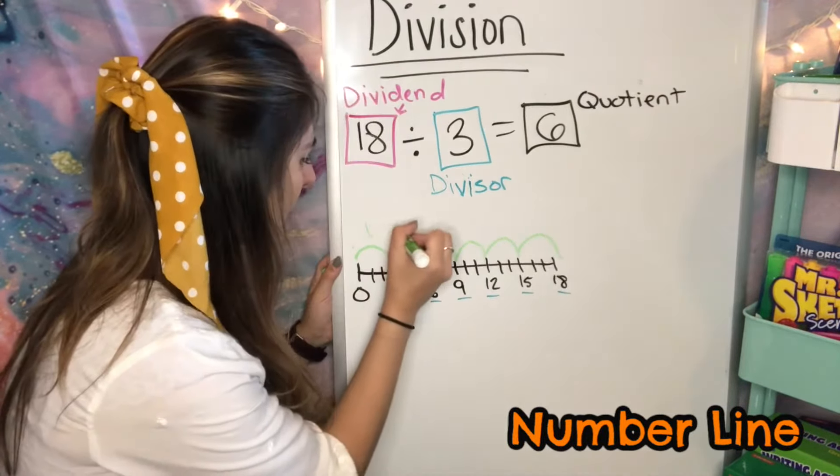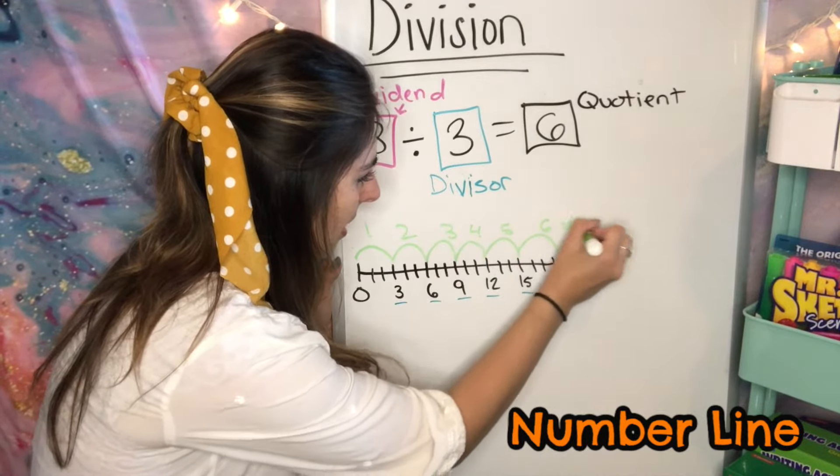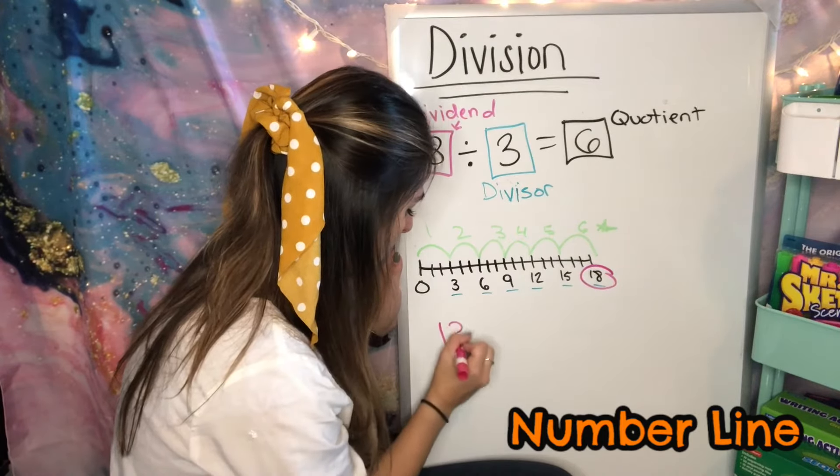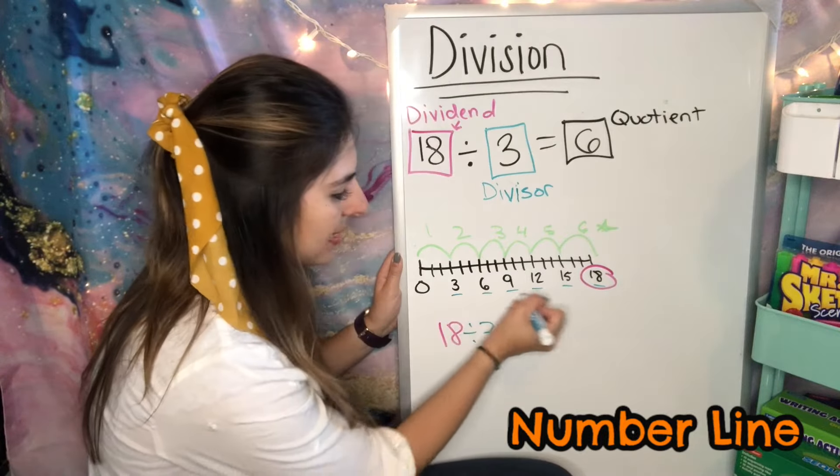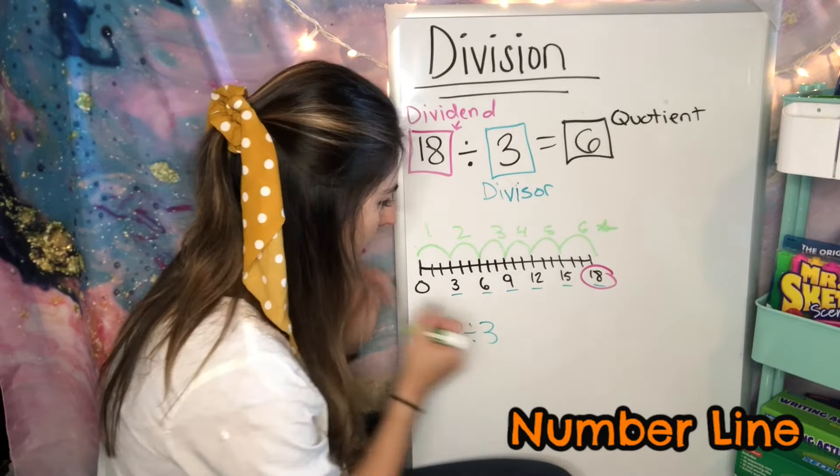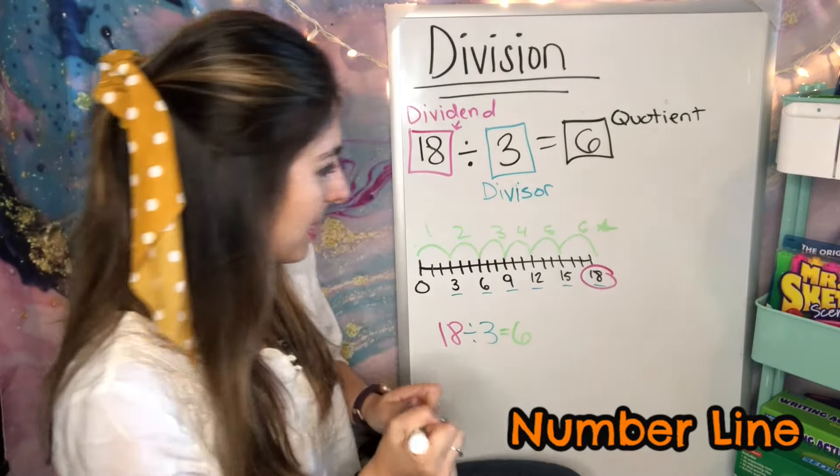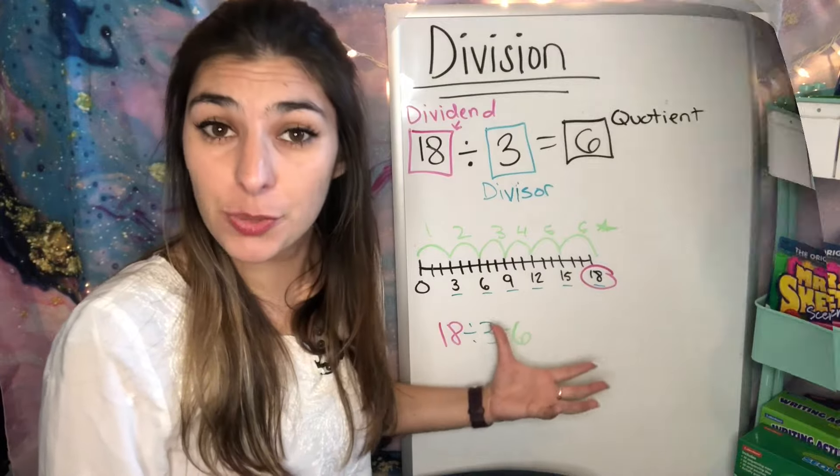Now I just have to connect those. I did 6 jumps. So my answer is 6. I see this 18. I'm dividing by 3 because that's my first number here. Also, I can see I'm counting by 3's. And that equals 6 because I did 6 big jumps to get there. This is also like skip counting, but it gives you a better visual.